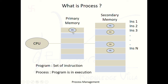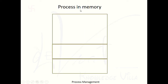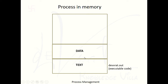After reaching primary memory, that program becomes a process. Let's look at how a process works inside the memory. The first portion is the text section. Inside the text section there is executable code — like devret.out. It is not high-level code; it is machine-level code that the machine understands.